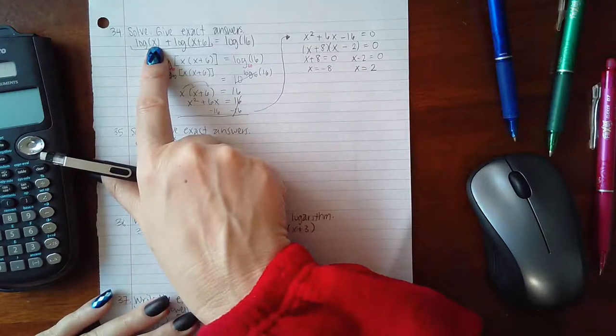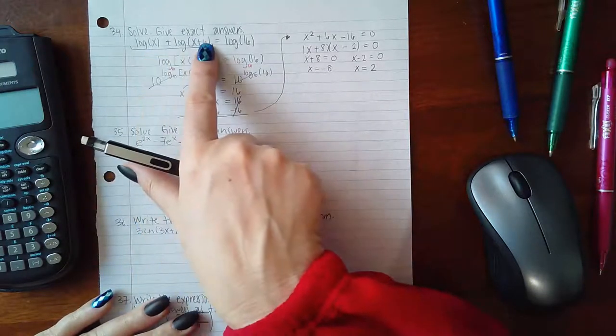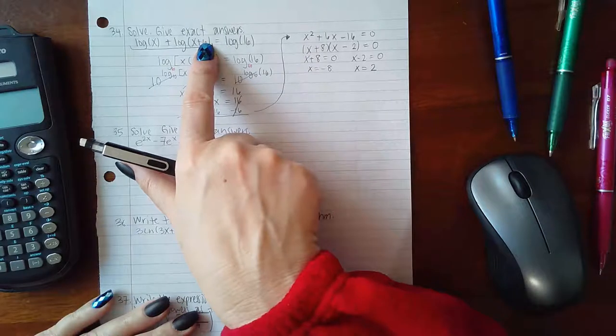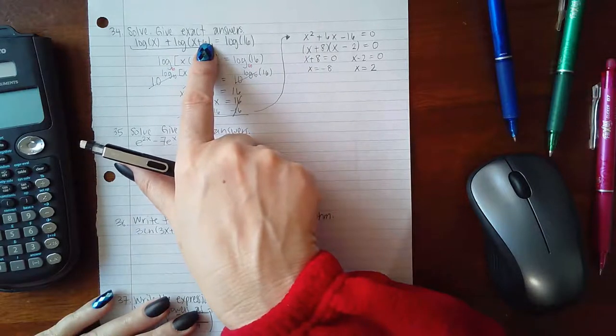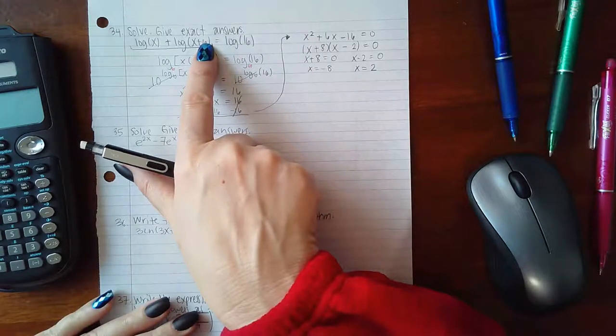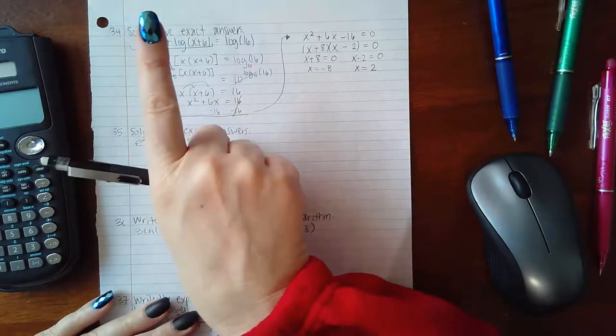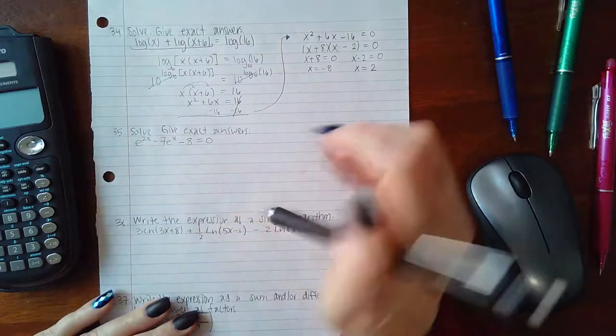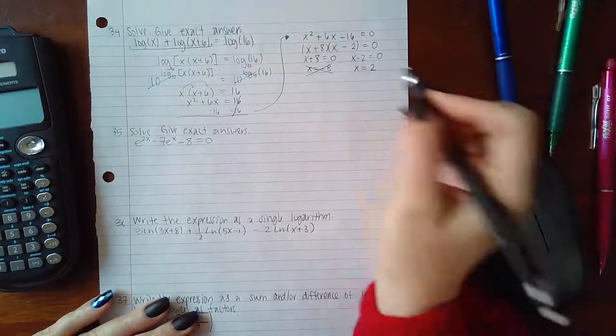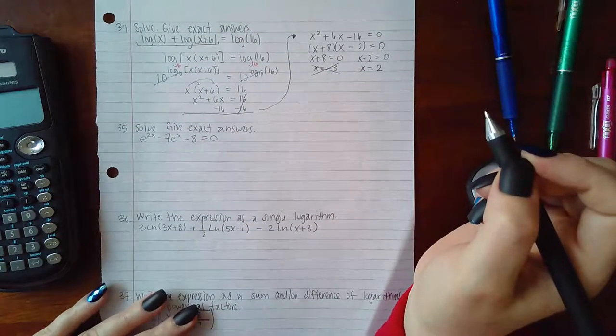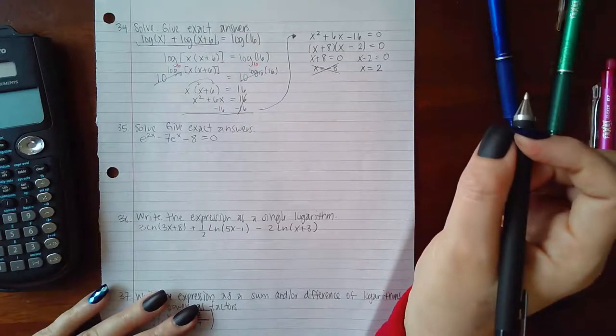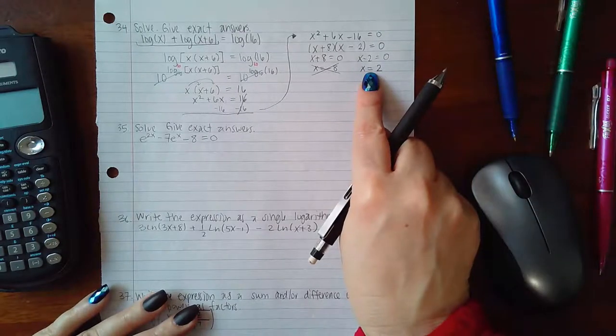It's undefined. Negative 8 is not going to be a solution because it doesn't work in one of the logs. The requirement is not that both arguments need to be negative. Just the fact that even one argument is negative makes this an extraneous solution, so it will not be included in my final answer.